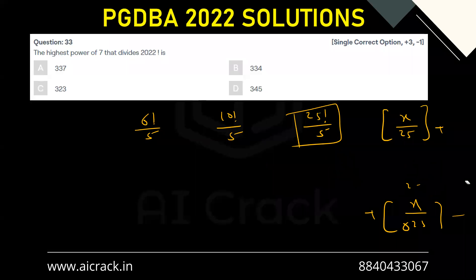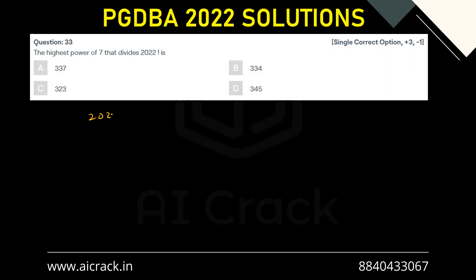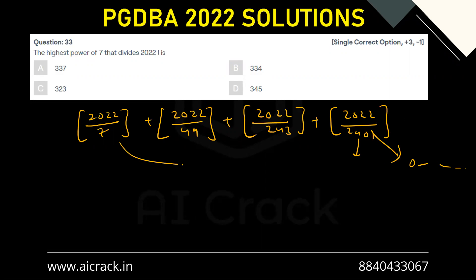Now let's apply this to our question: 2022 factorial divided by 7. We write GIF(2022/7) + GIF(2022/49) + GIF(2022/343) + GIF(2022/2401). Since 2401 > 2022, that term and all further terms become zero, so we only need to evaluate the first three terms.